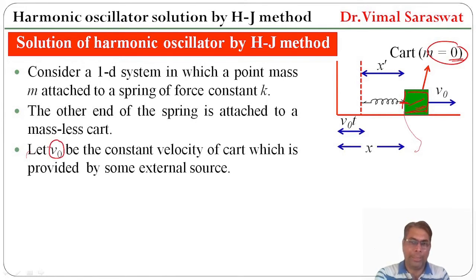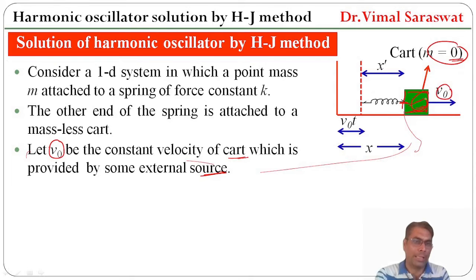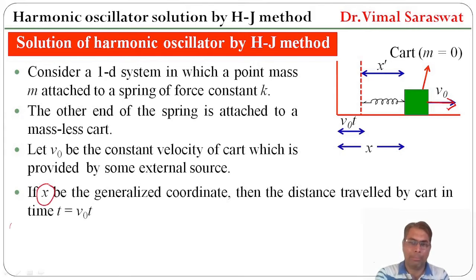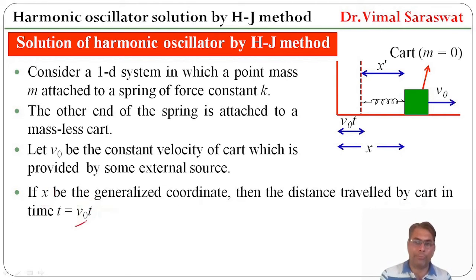Let v₀ be the constant velocity of the cart, which is provided by some external force. So a constant velocity v₀ is provided to this cart by some external force, and with this velocity the cart is moving in this direction. If x is the generalized coordinate, then the distance travelled by the cart in time t is v₀t, because v₀ is the constant velocity of the cart.